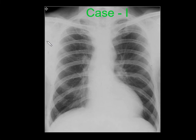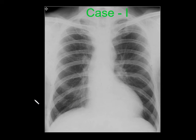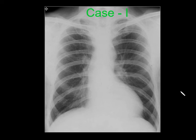Coming to the next case, you can see prominent ascending aorta and arch of aorta, but the descending aorta is not seen, along with classical inferior rib notching. Whenever a spotter is placed in the exam and you cannot find other abnormal findings, try to see the ribs — it may be a case of coarctation of aorta. This bilateral inferior rib notching is most commonly seen between the 6th to 9th ribs, due to dilated intercostal vessels causing subperiosteal bone resorption.